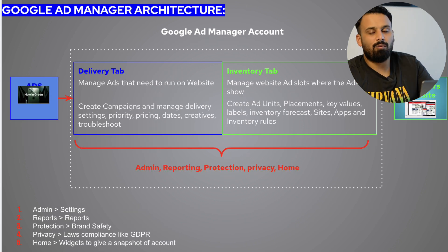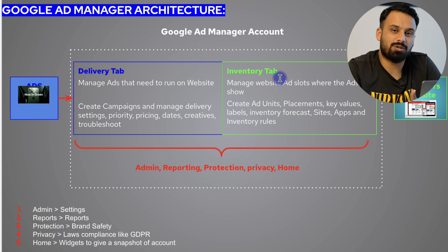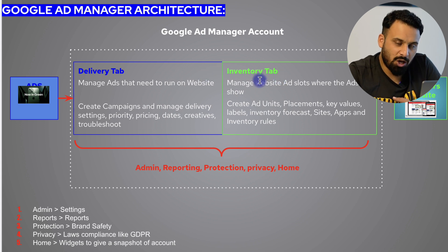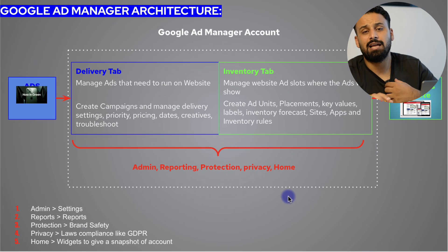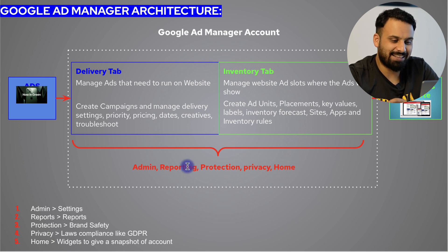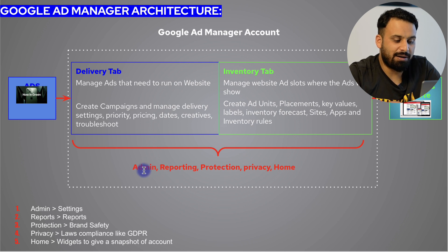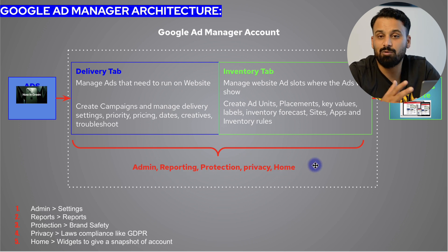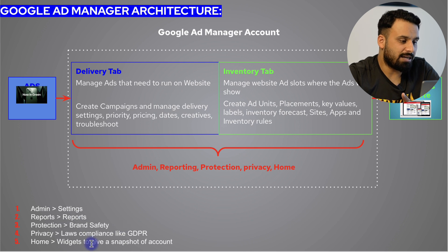Delivery and Inventory tabs are the most important and probably where you will spend most of your time. On top of these, there are other tabs as well — Admin, Reporting, Protection, Privacy, and Home. All these other tabs are like settings that control what happens in Delivery and Inventory. Delivery and Inventory are the most important; the others are all settings and reporting. For example, the Admin tab is like settings, and Reporting, Protection, and Privacy we will discuss all of them.